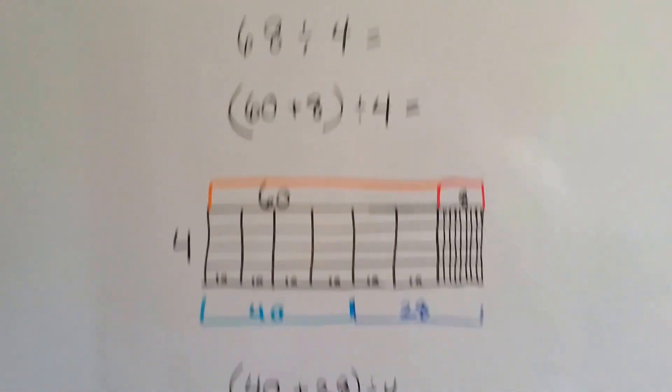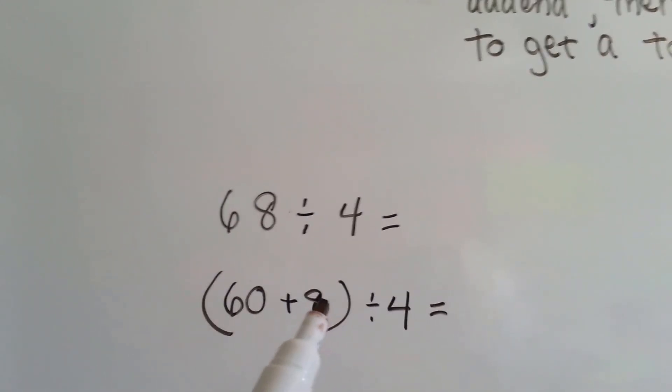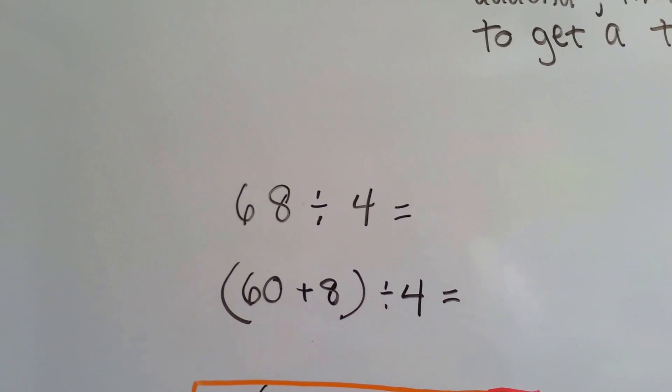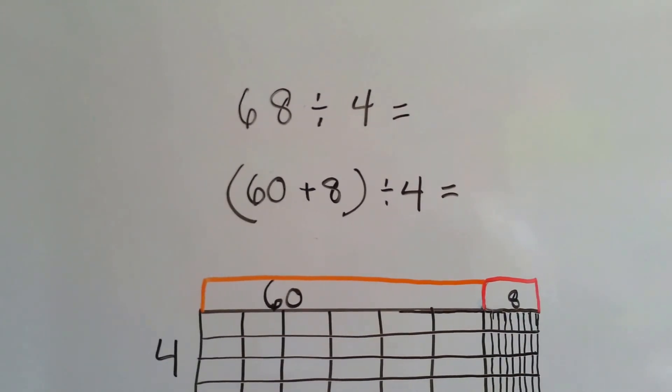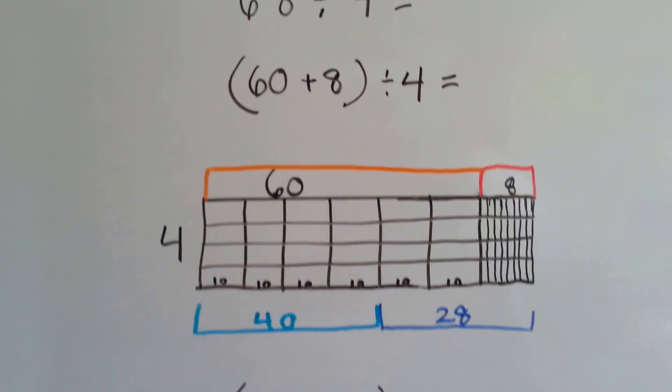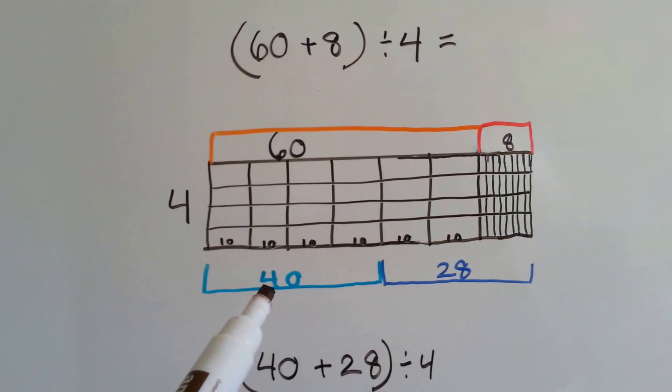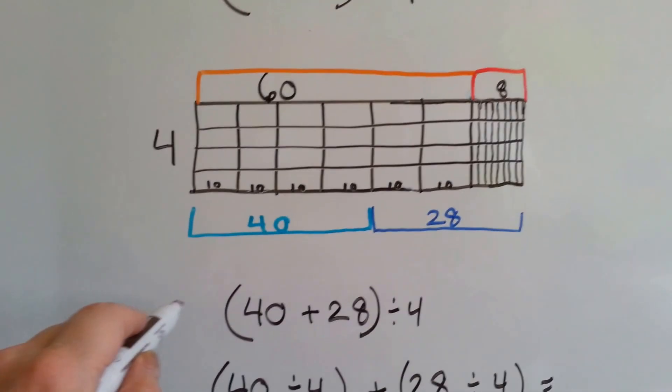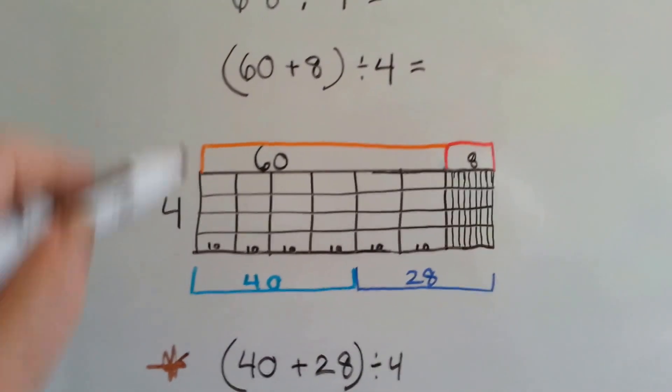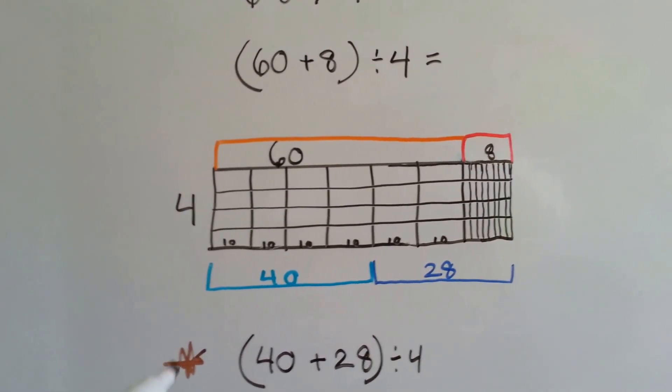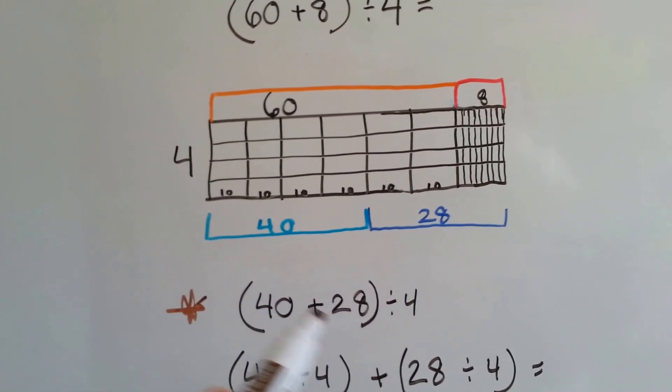Now let's take a look at this one. We've got 68 divided by 4. We could break it into 60 and 8, couldn't we, and divide it by 4. But would that be easy for us? If we broke this into 60 and then 8 little ones divided by 4, would that be as easy as if I broke it into 40 and 28? Because 4 times 10 is 40, isn't it?